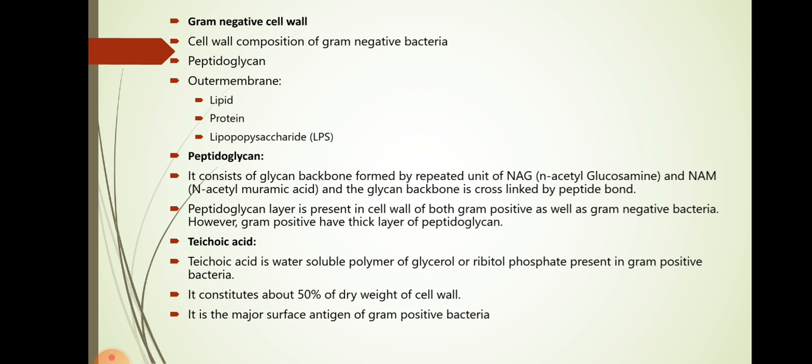Peptidoglycan consists of glycan backbone formed by repeated units of NAG and NAM. NAG full form is N-acetyl glucosamine. NAM stands for N-acetyl muramic acid. And the glycan backbone is cross-linked by the peptide bonds. Peptidoglycan layer is present in cell wall of both gram-positive and gram-negative bacteria. However, gram-positive have thick layer of peptidoglycan.